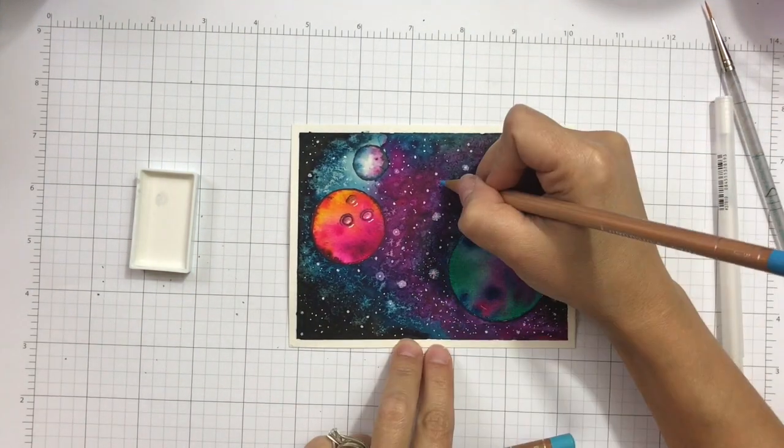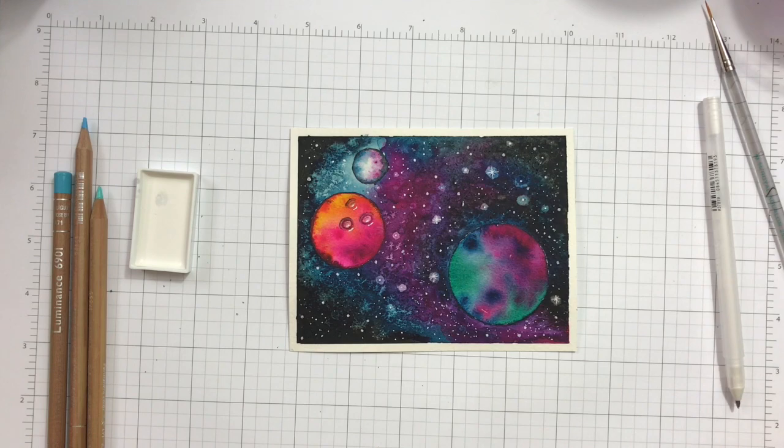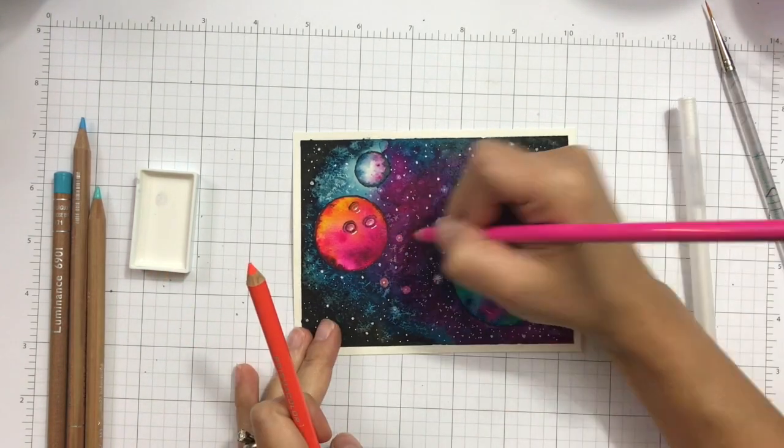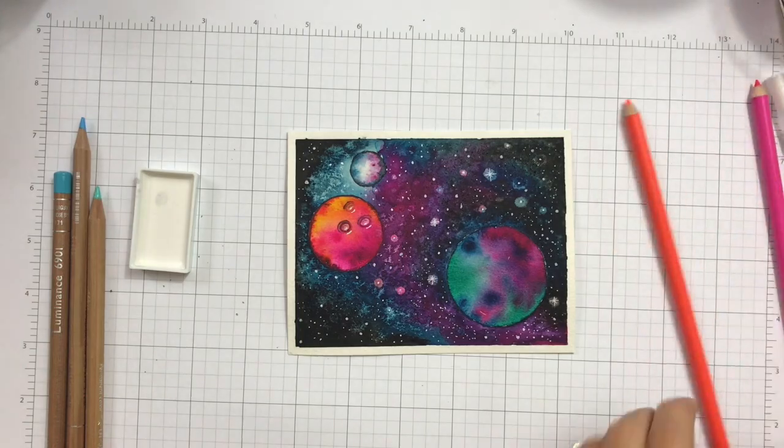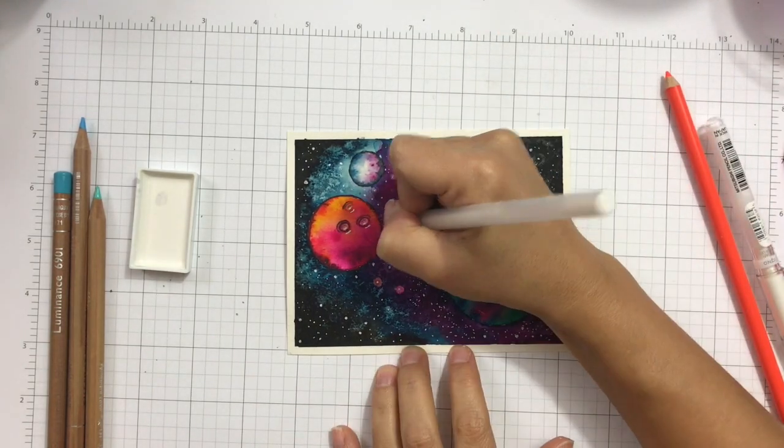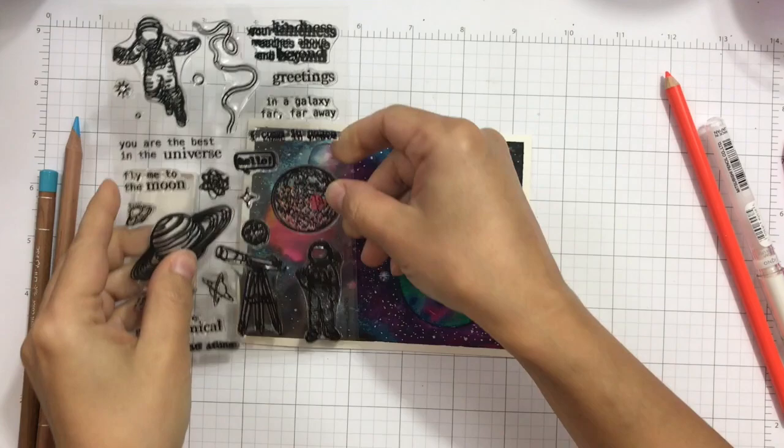Next I'll use some colored pencils. I'm using the Caran d'Ache Luminance and the Prismacolor to add a little bit of glow around those stars, and I'm adding a little bit more stars.